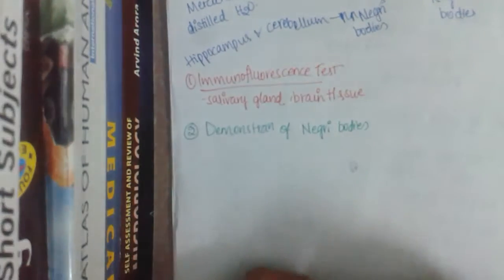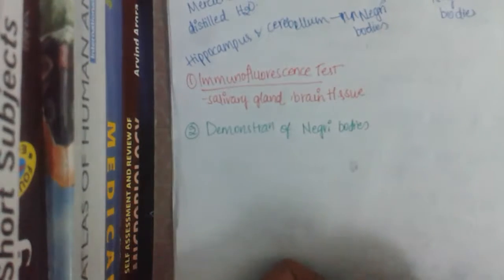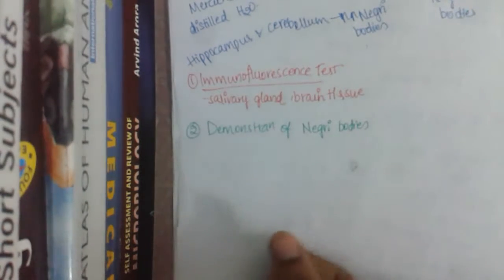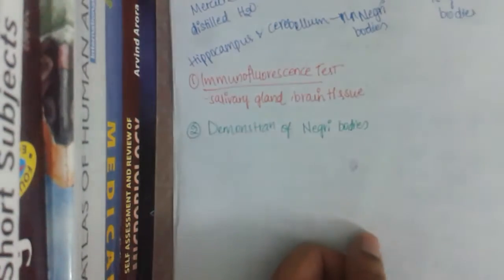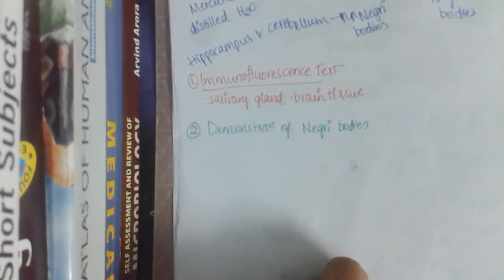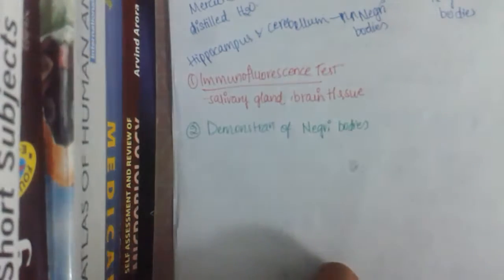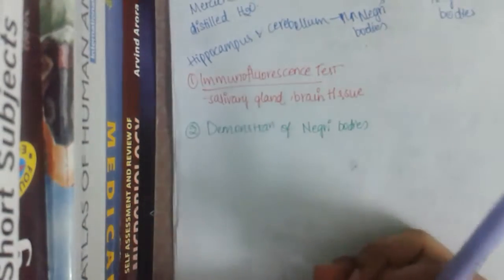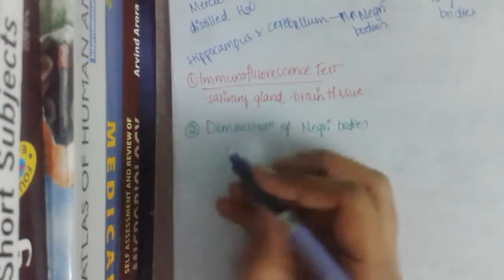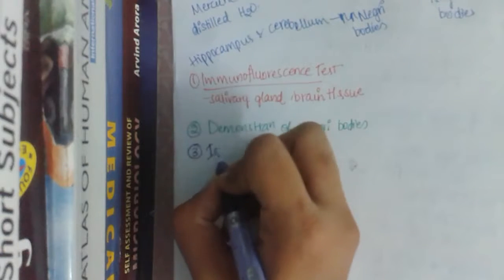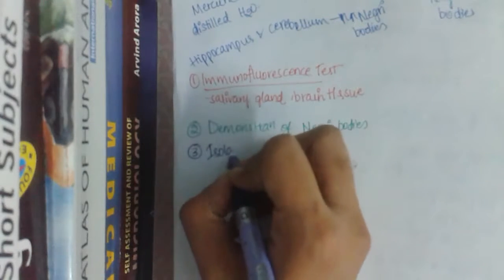The second test is demonstration of Negri bodies, which is still widely used in laboratories. It is mainly performed by staining with Seller's technique, as already discussed in the previous class. The third method is isolation of the virus.